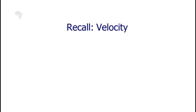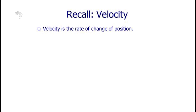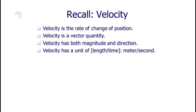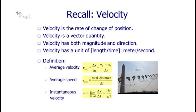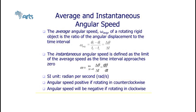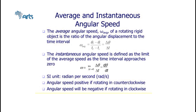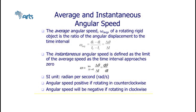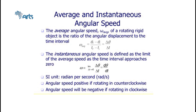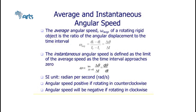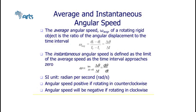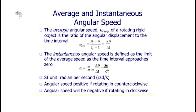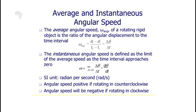Velocity of translational motion is defined as the rate of change of position. It is a vector quantity with both magnitude and direction, and its unit is meters per second. Average velocity is the time rate of change of position: final position minus initial position divided by time taken. Average speed equals total distance traveled divided by total time taken. Instantaneous velocity is calculated by v equals the limit of Δx over Δt as Δt approaches zero, or by the first derivative of position x with respect to time.